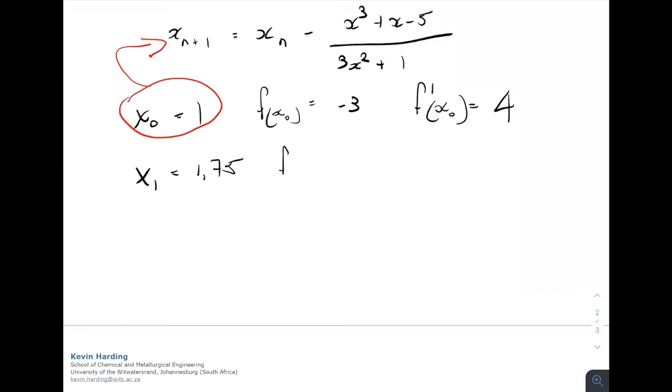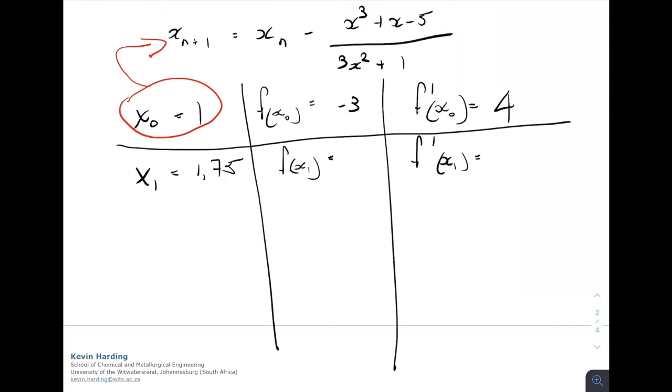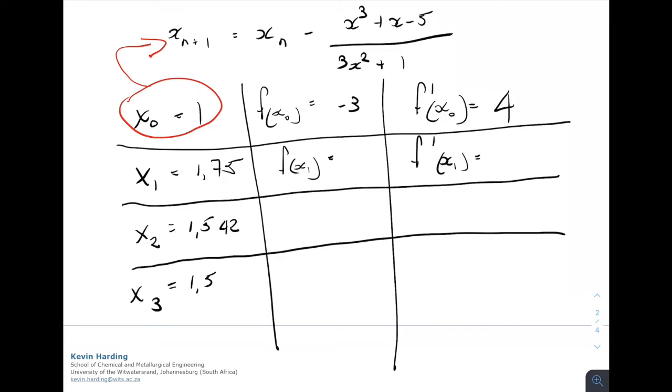I can now do the same thing and figure out what is the f of x1 and get the value for that, as well as the f prime x1 and get the value for that. I can now repeat this process and find x2, and x2 will be equal to 1.542. Doing the same thing for fx2 and f prime x2, using the top equation, I can now calculate x3 is equal to 1.5163, and I can continue this process over and over until I get x4, x5, and so on.